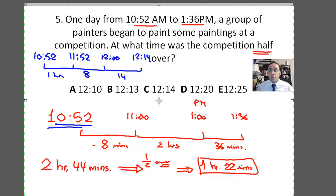So what is the answer? The answer is 12:14. This competition was half over at 12:14 PM. Which answer right here is 12:14? There you go. The answer is C.